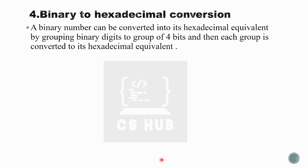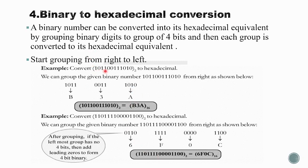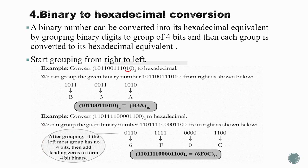For binary to hexadecimal, group the binary digits into groups of 4 bits. For example, grouping a binary number: group 1 is 0010, group 2 is 1010, group 3 is 0011, group 4 is 1011. 1011 corresponds to B, 0011 corresponds to 3, 1010 corresponds to A. So the answer is B3A base 16.